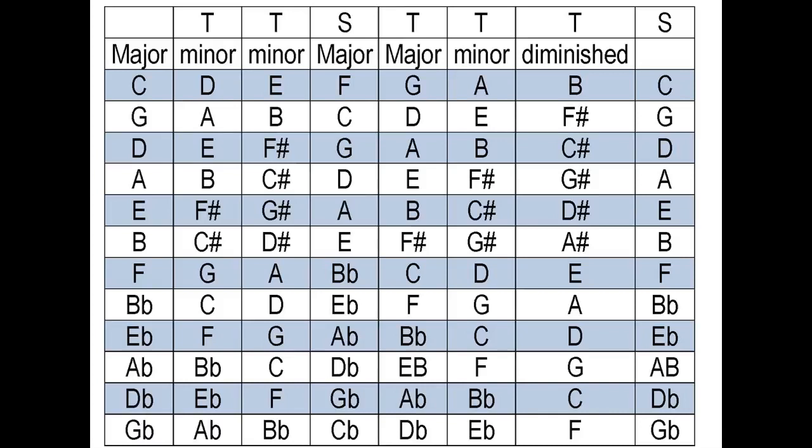So in your C major scale, the chords that are available to you are C major, D minor, E minor, F major, G major, A minor, and B diminished. So if you're writing a song in the key of C using those notes, those are the chords that will work automatically — they'll just sound good because all those chords are built using those notes.